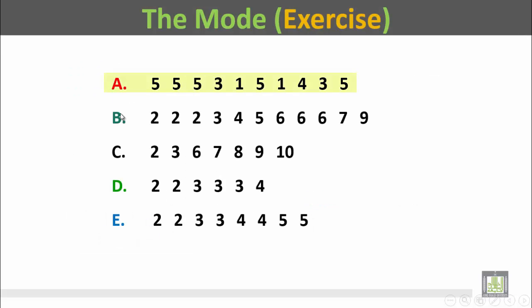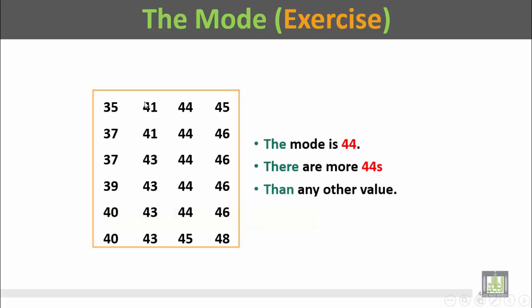A: the highest frequency is 5. B: the highest frequency is 2 and 6. C: no mode. D: the mode is 3, the highest frequency is 3. E: no mode. In this set of data 44 has the highest frequency so the mode is 44, there are more 44s than any other value.